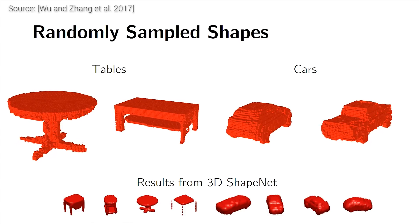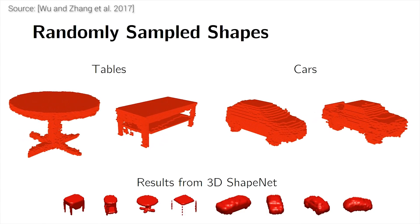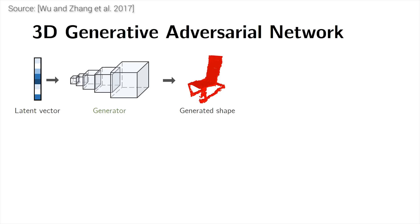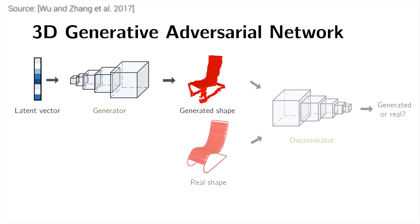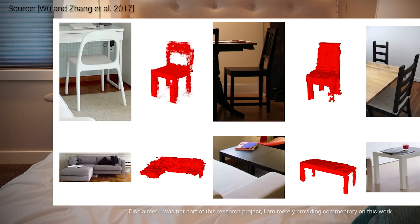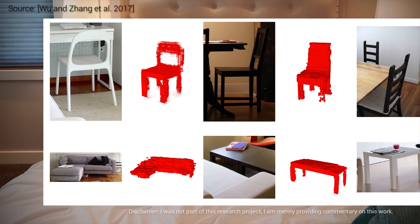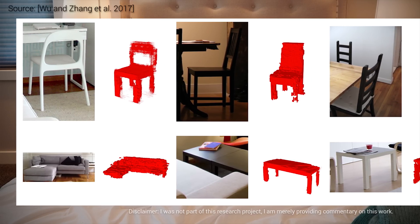The generator network generates a bunch of different three-dimensional shapes, and the basic question for the discriminator network would be: are these 3D shapes real or synthetic? The main use case of this technique — and watch closely — is taking a photograph of a piece of furniture and automatically getting a digital 3D model of it.